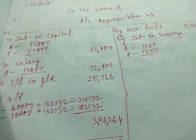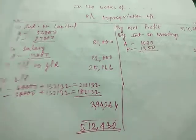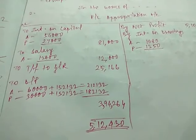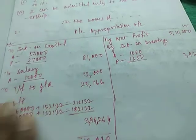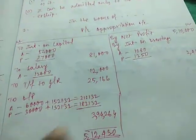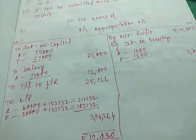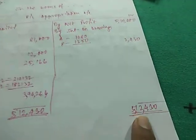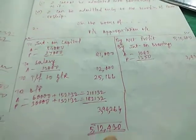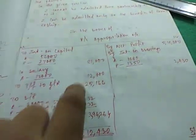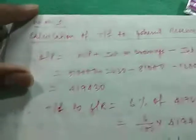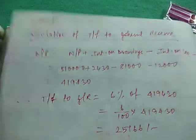It was given in the question 6% of the divisible profits. So first of all we will find the divisible profit. This is not the divisible profit that we will use for the general reserve. We will be using the divisible profit that is appearing before we have made the actual divisible profit. First of all we will calculate DP for the transfer to general reserve. That is net profit plus interest on drawings 510,000 plus 2430 minus interest on capital minus salary.